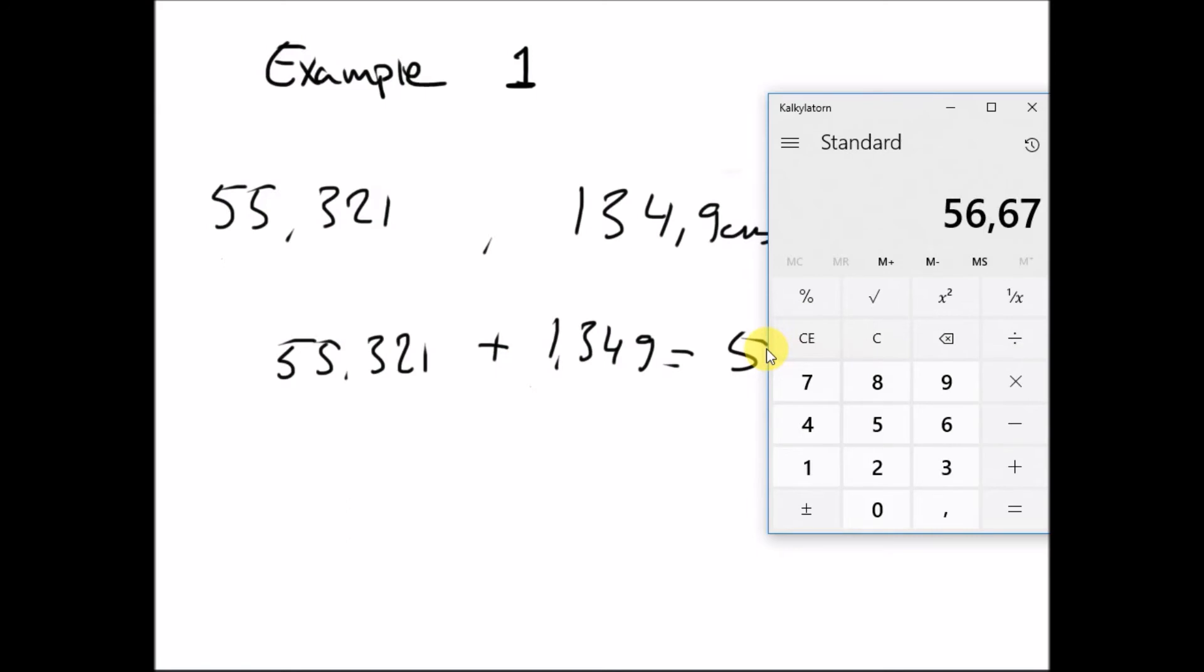So you'd take 55.321 plus 1.349. This is your height of instrument as we established. And you use the M plus sign. Now when you want to use this number, you use memory recall. And you can continue doing something with this. So that's a very practical tip. Memory plus when it's empty, memory recall, and if you want to clear your memory, MC, memory clear.